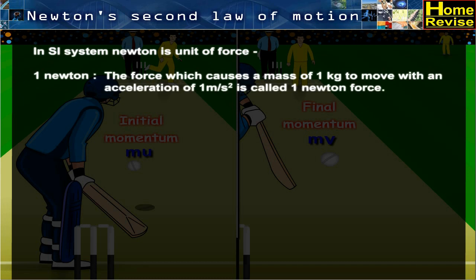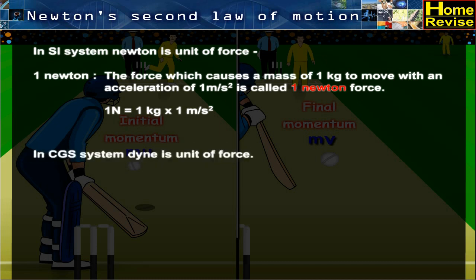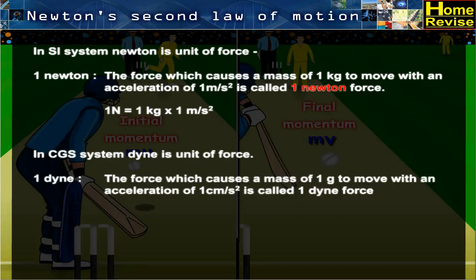In the SI system, Newton is the unit of force. 1 Newton is the force which causes a mass of 1 kg to move with an acceleration of 1 meter per second squared, and is called 1 Newton force. 1 Newton equals 1 kg·m/s².